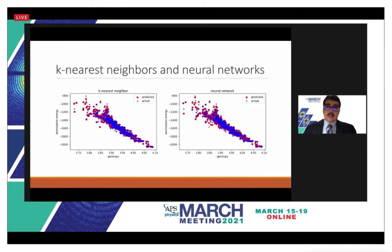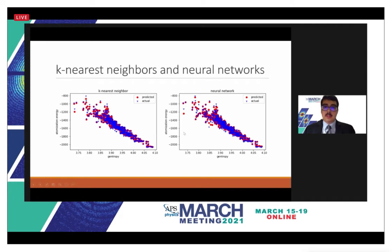Here is a side-by-side comparison of k-nearest neighbors and the neural network. The graph shows gentropy of the molecule versus both the predicted atomization energy from the algorithm and the actual atomization energy. Both perform quite similarly, although some of the outer layers show some difficulty.